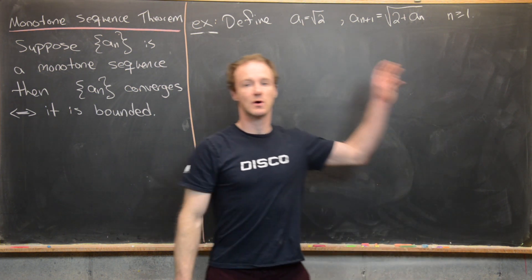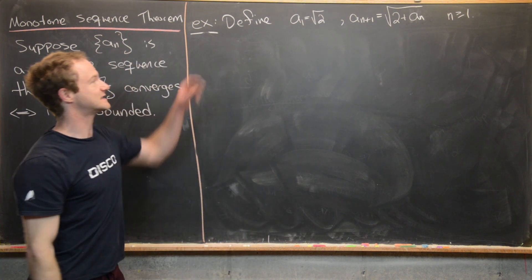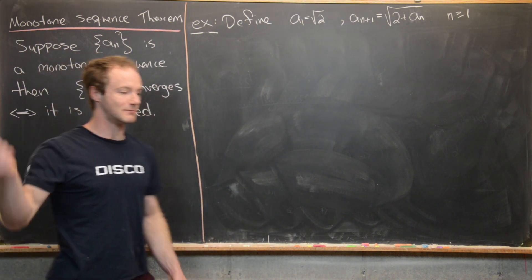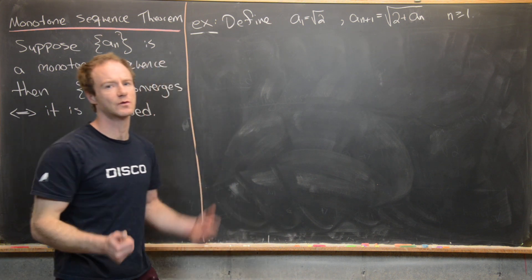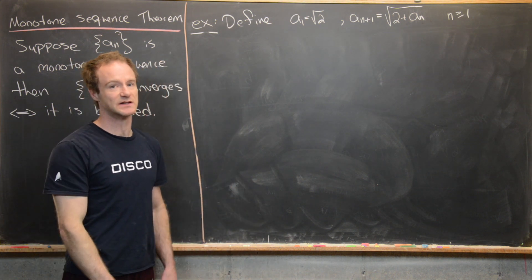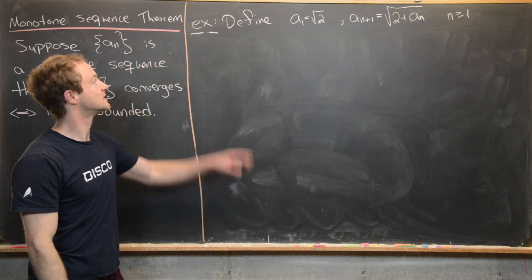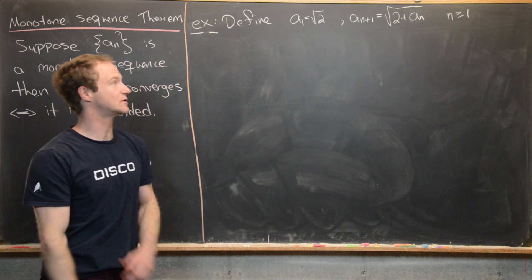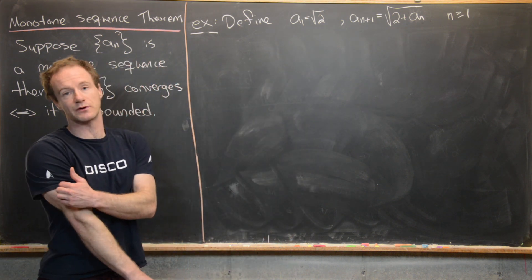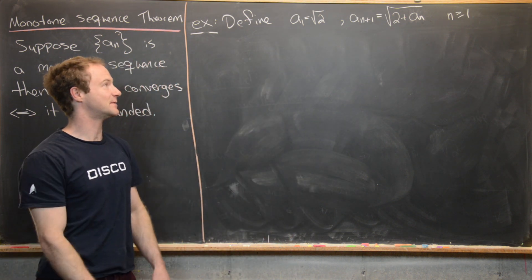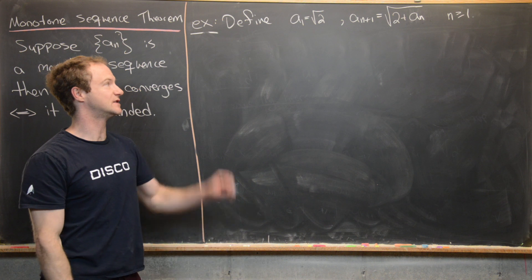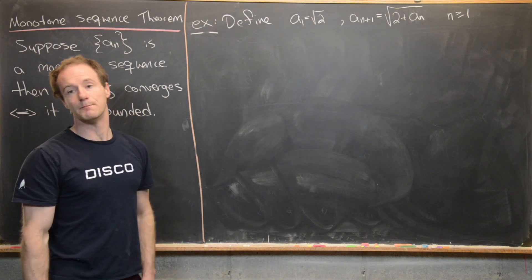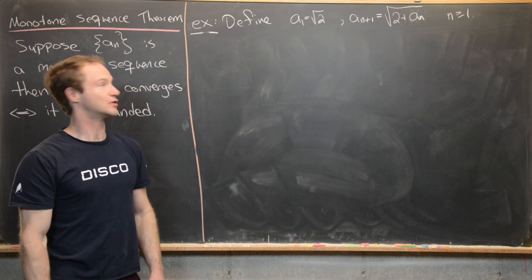We want to look at an example, and the example is a recursive sequence. In fact, the monotone sequence theorem is a really good way to find the limit of a recursive sequence. So let's define it by a sub 1 equal to the square root of 2, and then a sub n+1 equal to the square root of 2 plus a sub n, for n greater than or equal to 1.